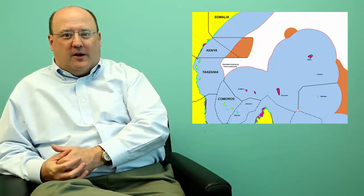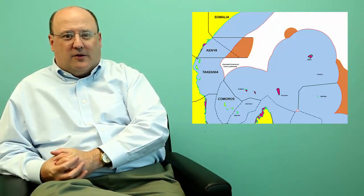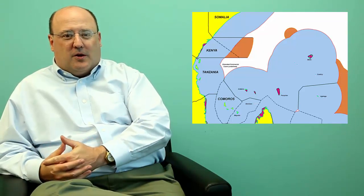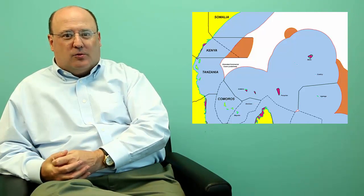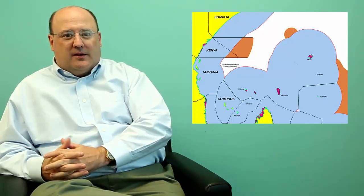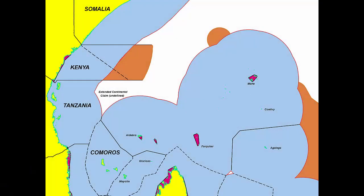The claim itself highlights some of the problems with extended continental shelf being asserted by states in that it's difficult to see how the Comoros' situation is one that is countenanced under the convention. Certainly a continental shelf that proceeds underneath another state's EZs is novel, but it's by no means unique.